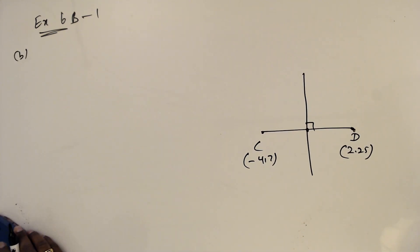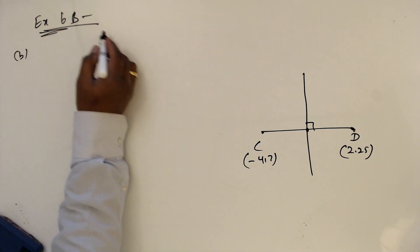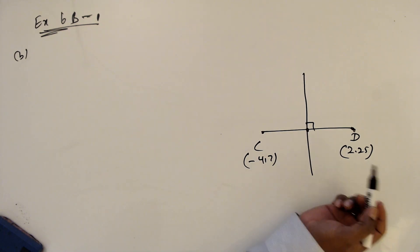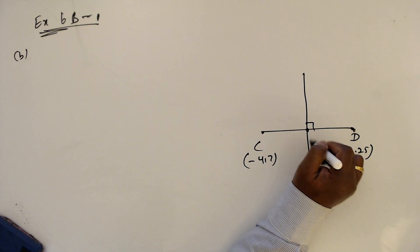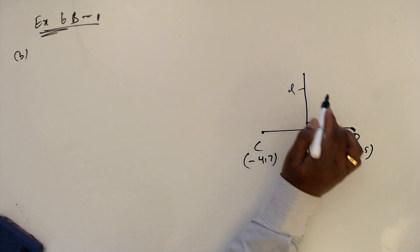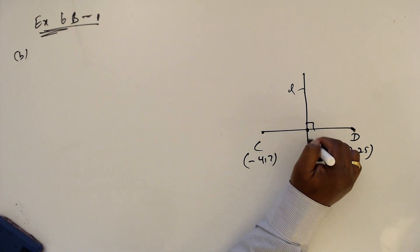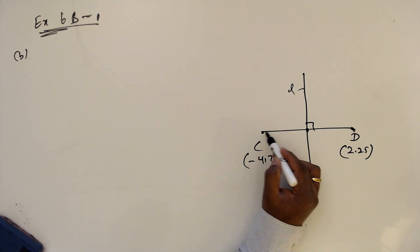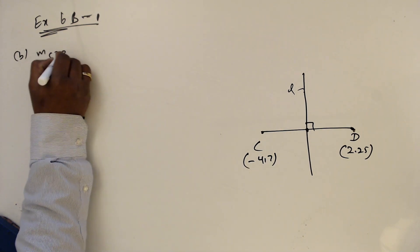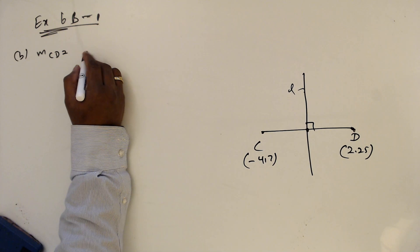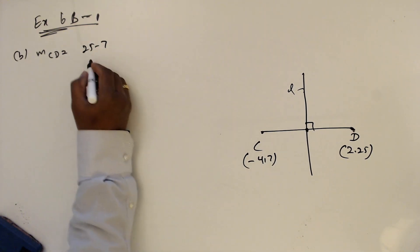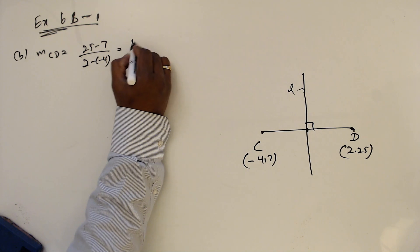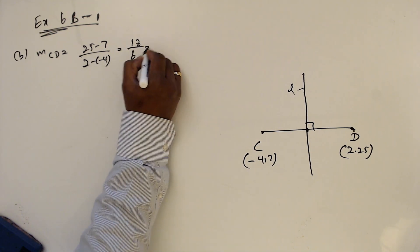Question part B. We want to find the equation of this perpendicular bisector line; I'll call it L. First I'll find the gradient of CD. To find the gradient of CD: MCD equals (25 minus 7) divided by (2 minus minus 4).